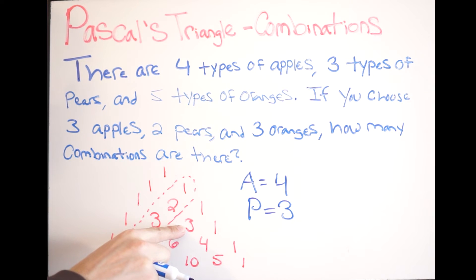And then our last one, we're going to do the same thing for oranges. Oranges, we have 5, that's our total, so we're using this row down here. And we're choosing 3, so 0, 1, 2, and 3. So it's 10.